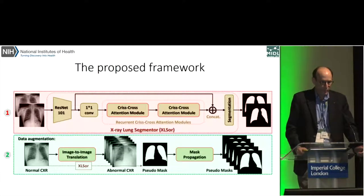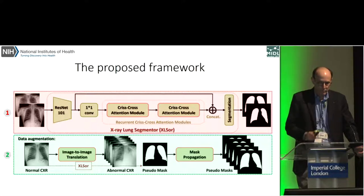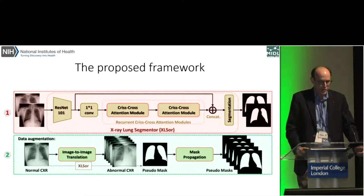The proposed framework in this project is a two-stage framework. The top row in this image shows the Excelsior component, which is a modified version of ResNet in which additional modules called crisscross attention models are used that provide a more global context of the image.